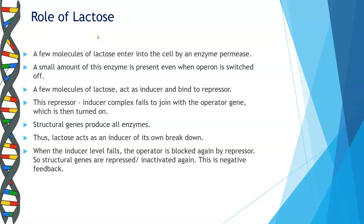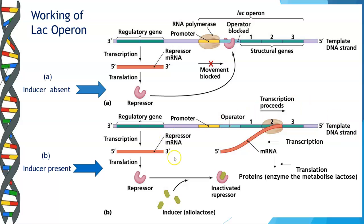Let us quickly have a look at the role of lactose. Lactose is an important component in the working of your lac operon — the operon functions only when lactose is available, as lactose acts as an inducer. A few molecules of lactose enter into the cell by the enzyme permease. A small amount of this enzyme is present even when the operon is switched off. A few molecules of lactose act as inducers and bind to the repressor. This repressor-inducer complex fails to join to the operator region, which is then turned on. The repressor gets inactivated and cannot bind to the operator region.